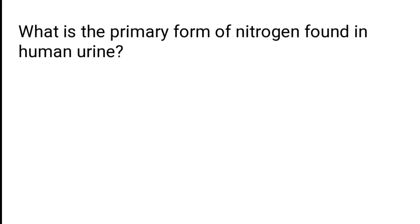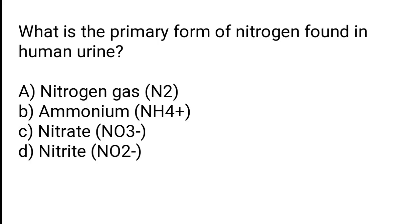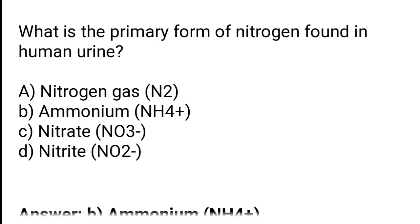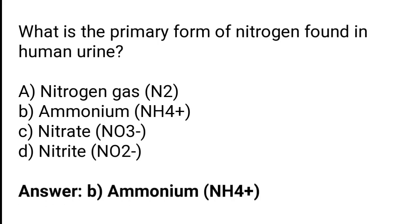What is the primary form of nitrogen found in human urine? The options are nitrogen gas (N2), ammonium (NH4+), nitrate (NO3−), or nitrite (NO2−). The correct answer is option B — ammonium (NH4+) is the primary form of nitrogen found in human urine.